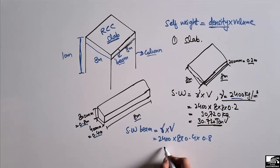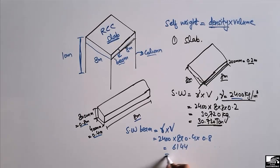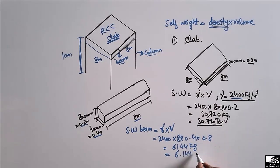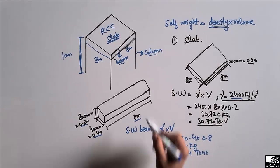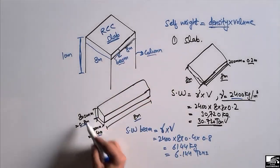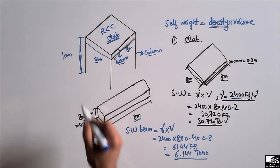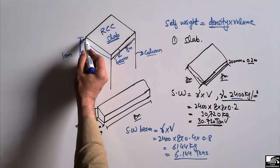Multiplying these values gives 6,144 kg. Dividing by 1000, we get 6.144 tonnes. So the self weight of this beam with these dimensions is approximately 6 tonnes. Now let's move to the column to find out its self weight.